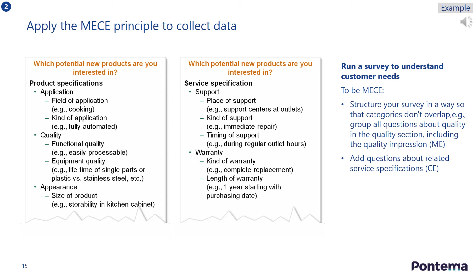To understand which new products to introduce, you decide to run a survey to better understand new customer needs. To be MECE, structure your survey in a way so that categories don't overlap. For example, group all questions about quality in the quality section, and add separate questions within each category to ensure all relevant issues are covered.